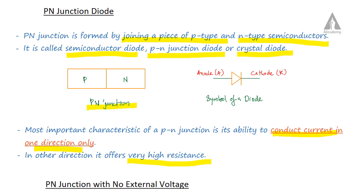We call this device a semiconductor diode, PN junction diode, or crystal diode. It conducts only in one direction, and in the opposite direction it offers very high resistance. I hope this session will be helpful for you. See you in the next session.